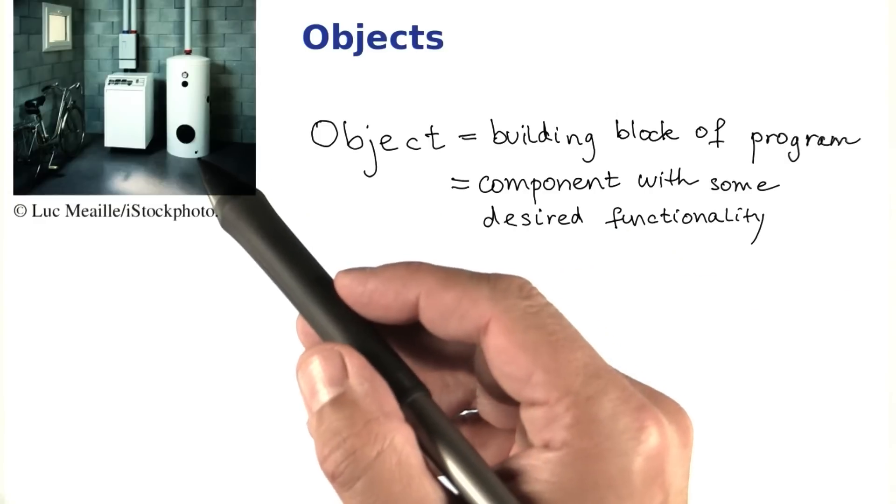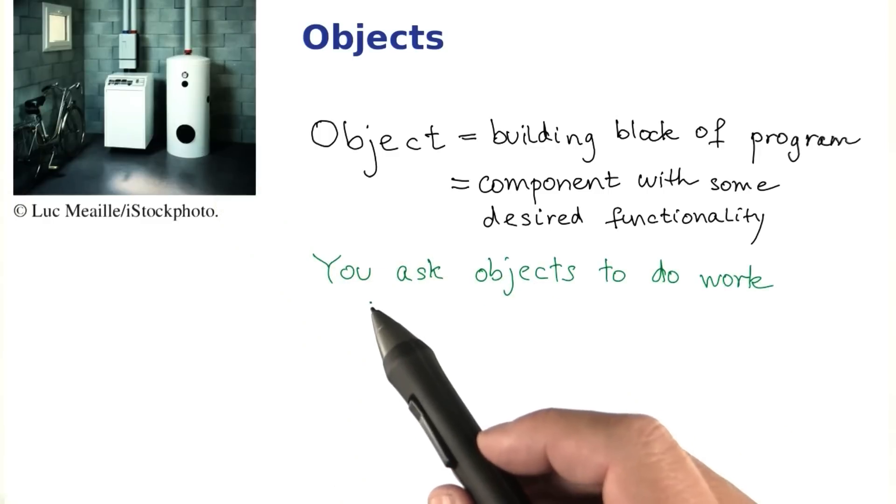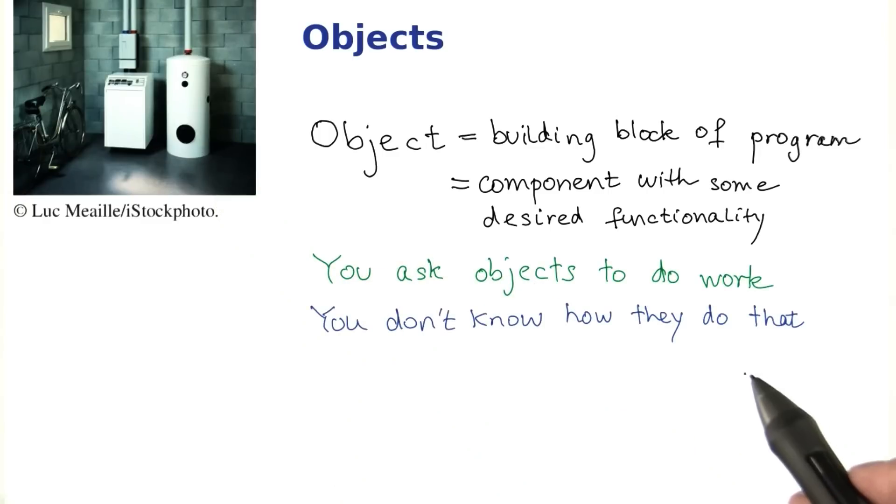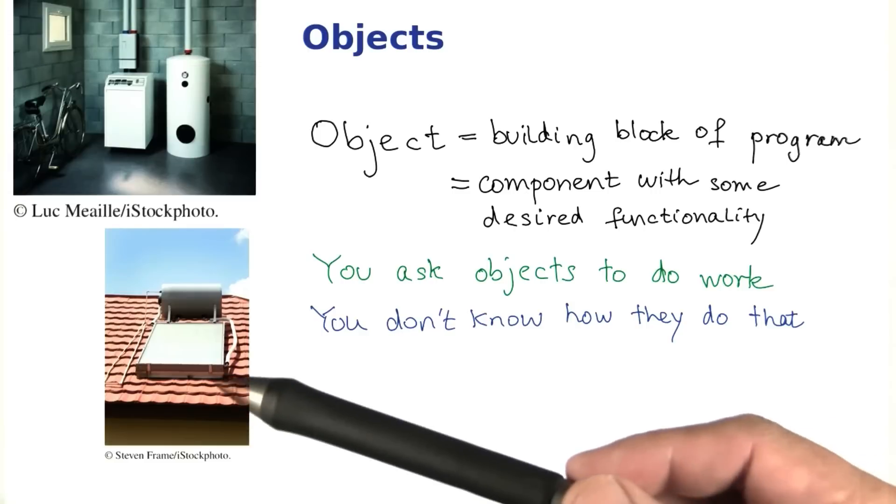Just as the water heater over here has some desired functionality for the builder, it heats water. In your programs, you ask objects to do work. You don't know how they do that, and that's okay. Just like, if you really think about it, do you actually know how a water heater does its job? Or for that matter, do you care?